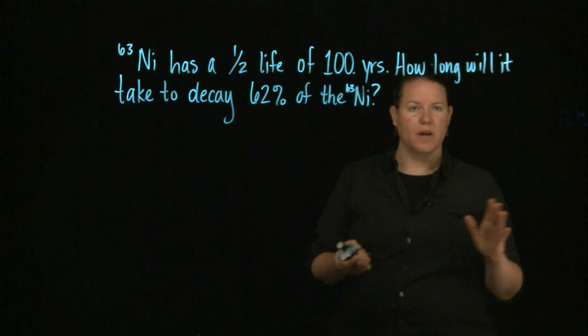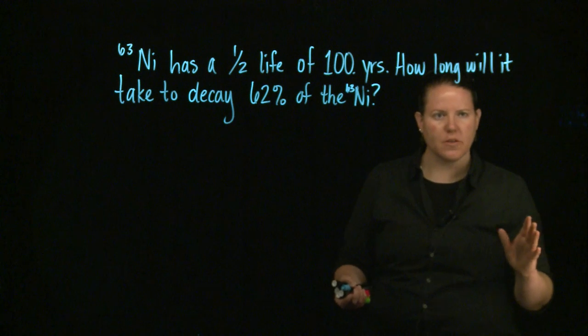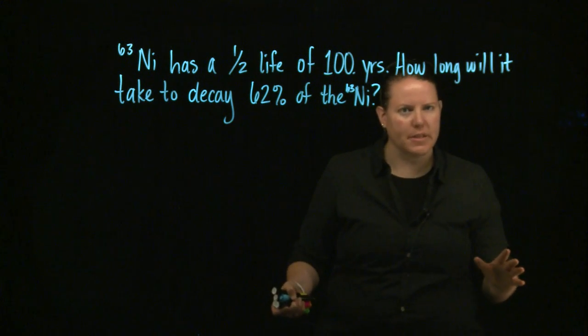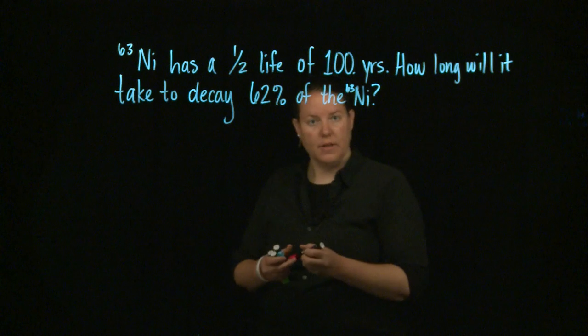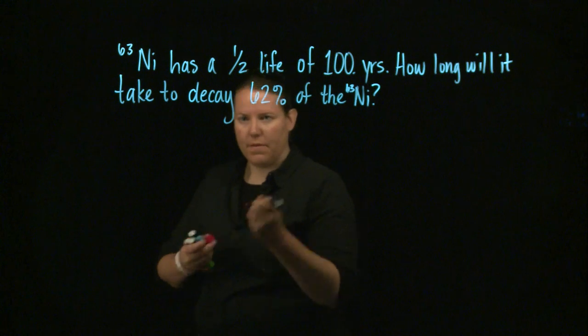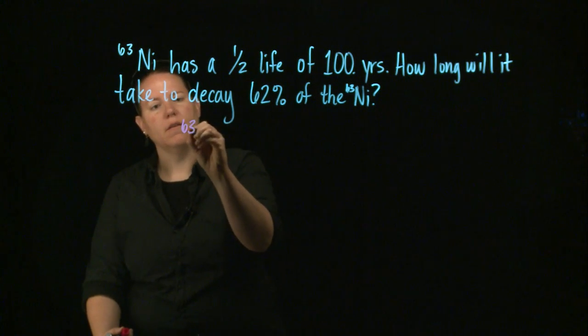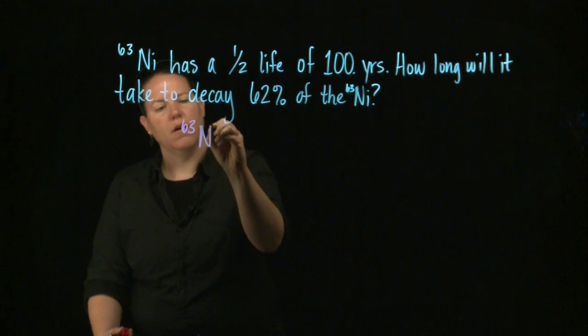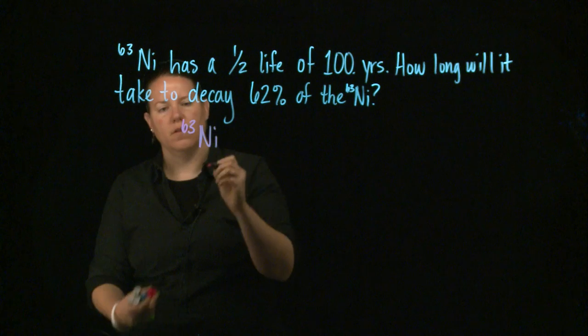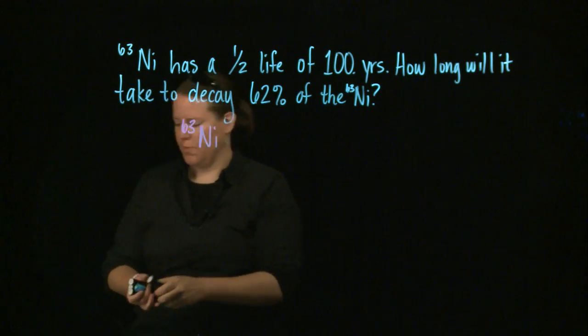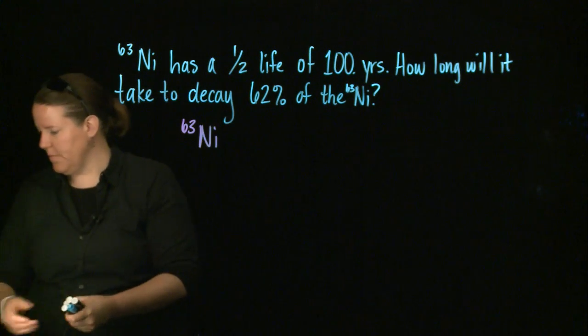First off, let's ask ourselves: how does nickel-63 decay? Well, that is based off of the probability of decay of this particular isotope.